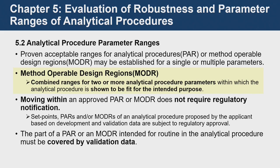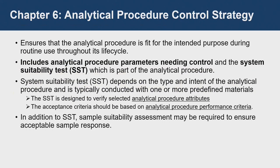About MODR — it refers to combined ranges for two or more analytical procedure parameters within which the analytical procedure is shown to be fit for the intended purpose. Within the range of MODR, performance characteristics must be maintained. If PAR and MODR are accepted, changes within this range are not looked at as changes. The PAR and MODR must be covered as part of the validation data.